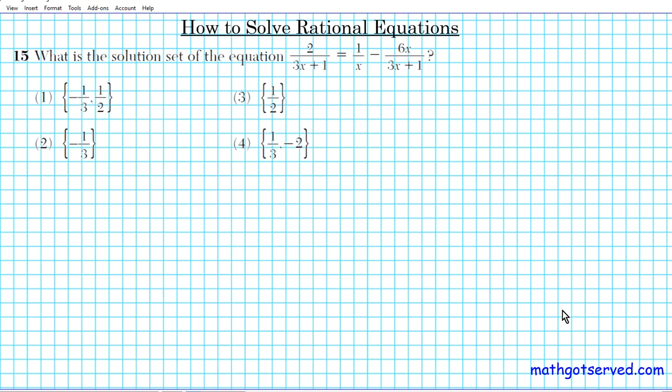The question is: what is the solution set of the equation 2 over 3x plus 1 equals 1 over x minus 6x over 3x minus 1.